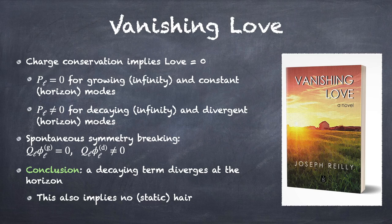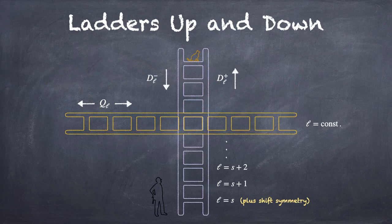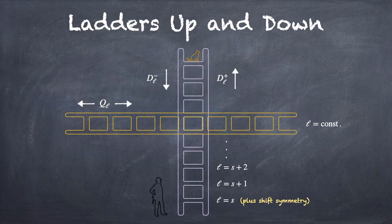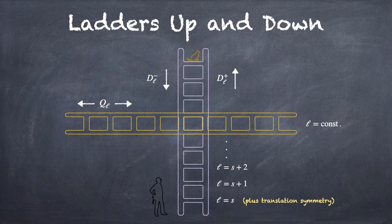So having a decaying term at infinity, we can see from symmetry reasons, necessarily gives you a divergent term at the horizon. And that's why there's vanishing love numbers from this symmetry perspective. Just to explain a little bit more of the story here, so we have these vertical ladders, we call them, that you can go up and down to different L modes using these D_plus and D_minus operators. And the translation symmetry at the lowest level allows you to turn the ladder sideways and focus just on one L level.